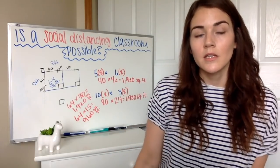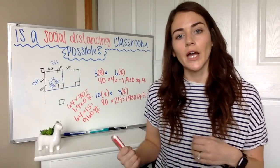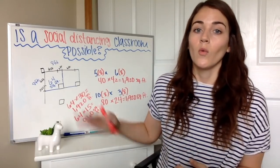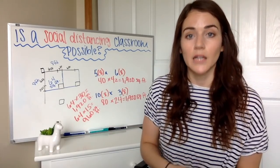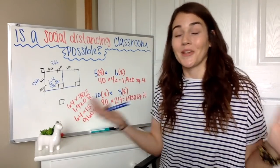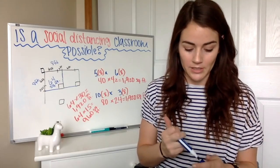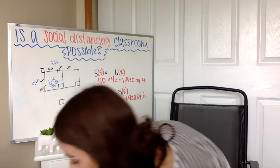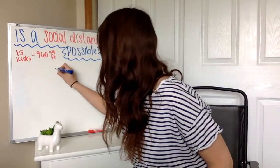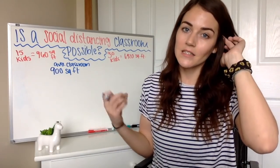Since we know it depends on number of students, the next thing I started to think about is: how big is an average size classroom? If I know each student is going to take up a minimum of 64 square feet, about how many kids could I fit in an average size classroom with the social distancing protocol? I found on Google that the average square footage of a classroom is 900 square feet.